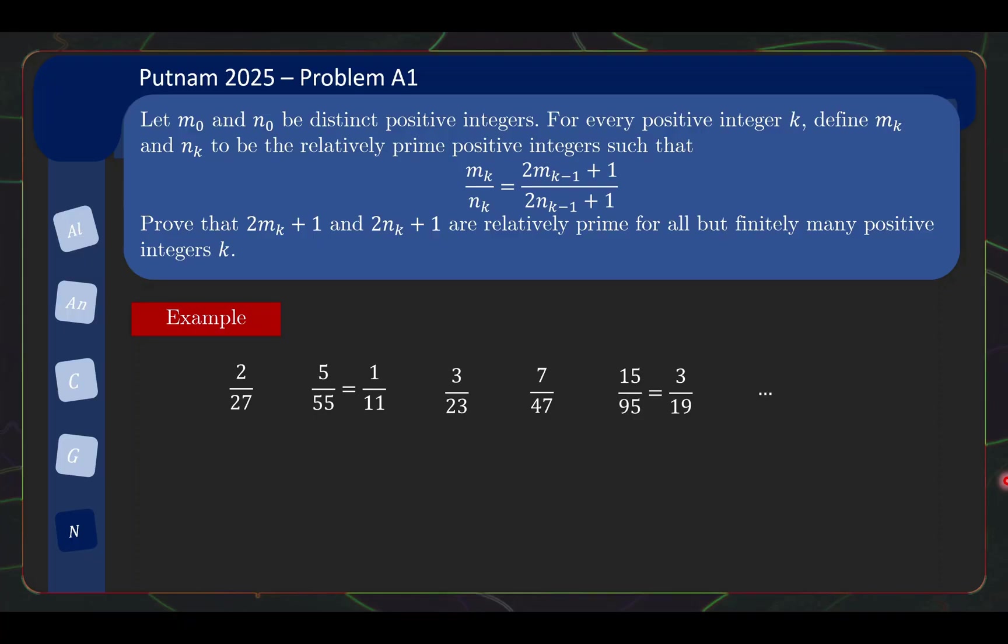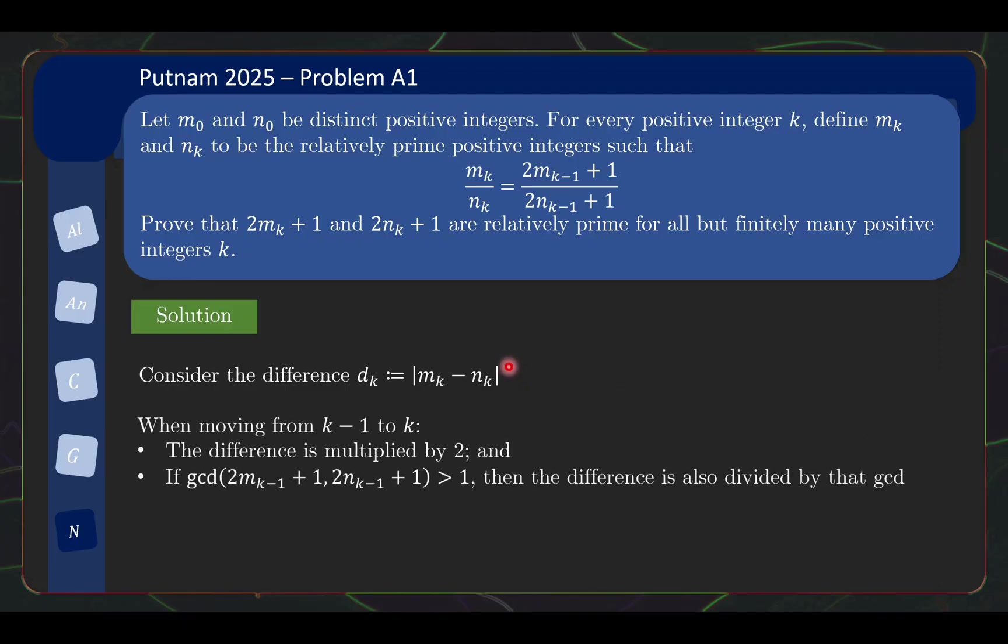I'm going to go straight into the solution because the solution is actually quite short. The key to this problem is to actually look at the difference between the numerator and denominator. And why is that so? Well, when you move from the previous term to the current term, what you do is first you construct this fraction. And notice that in constructing this fraction, your difference is multiplied by 2 because you multiply m and n by 2 and then you add 1 but adding 1 doesn't do anything to the difference.